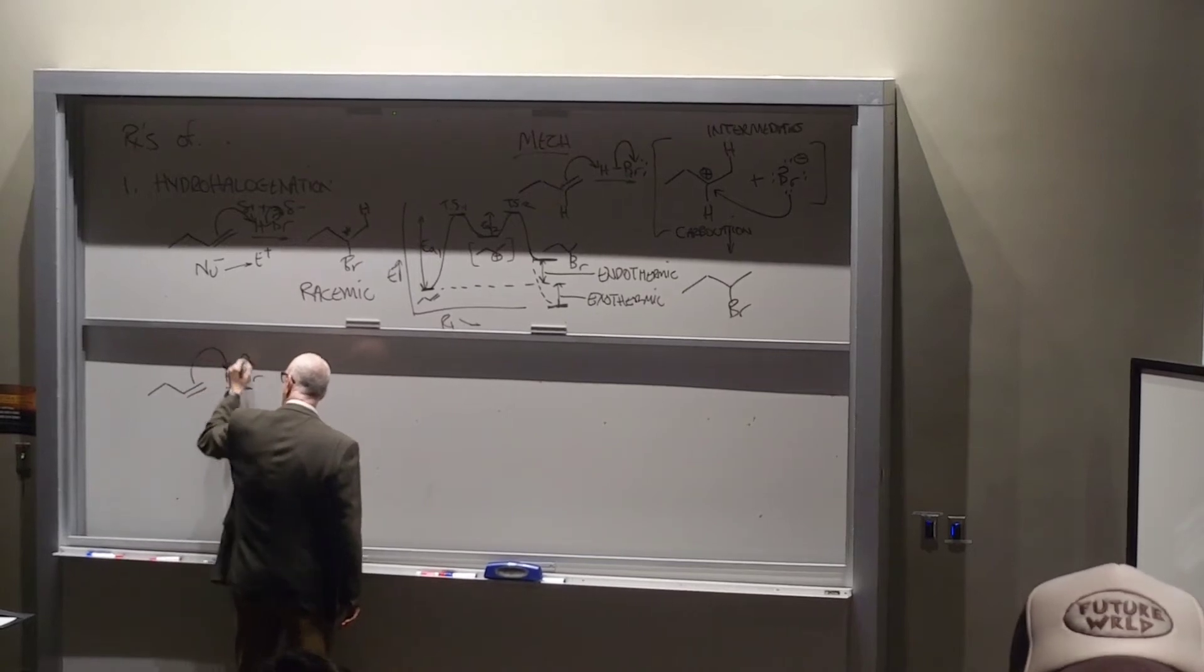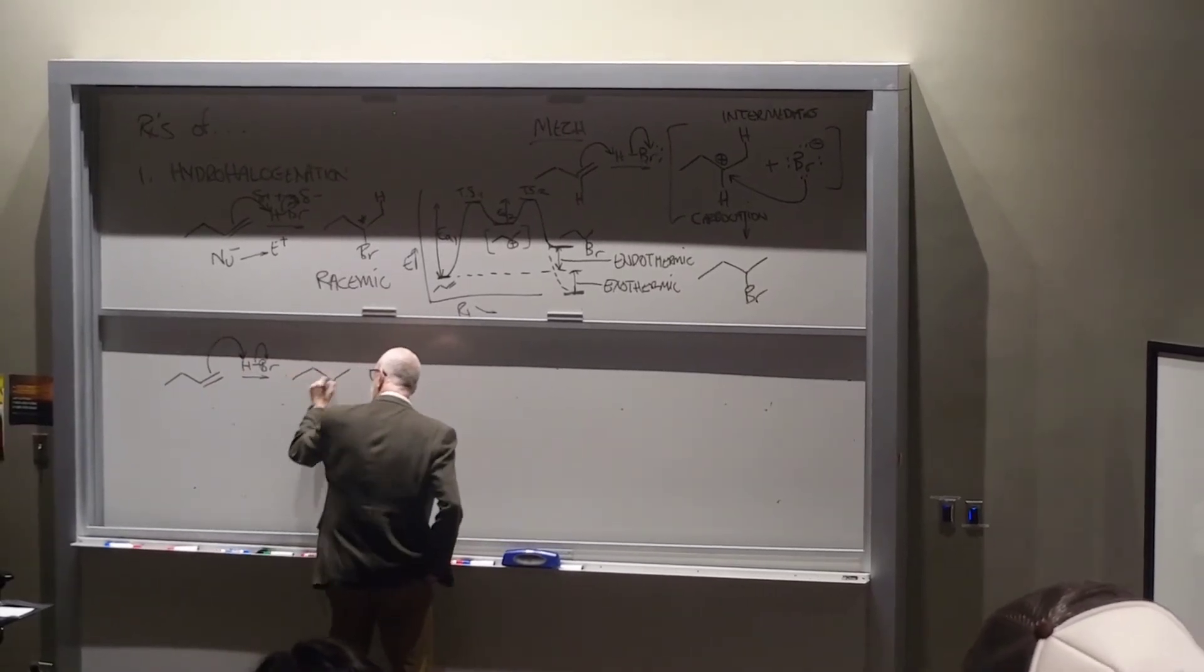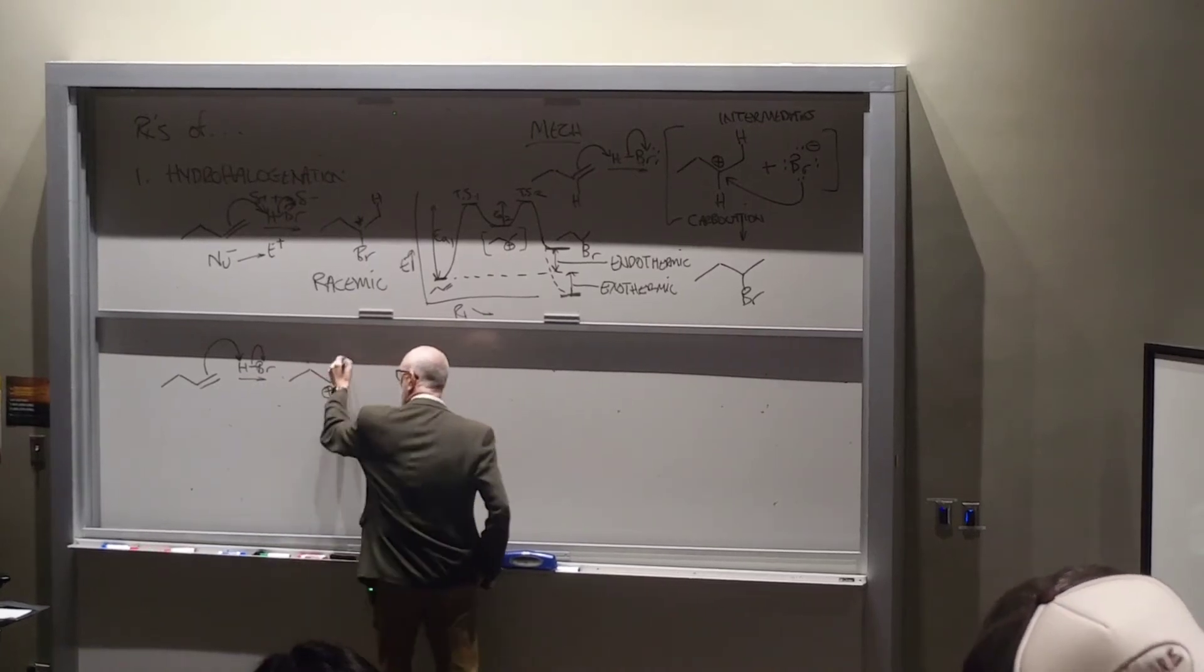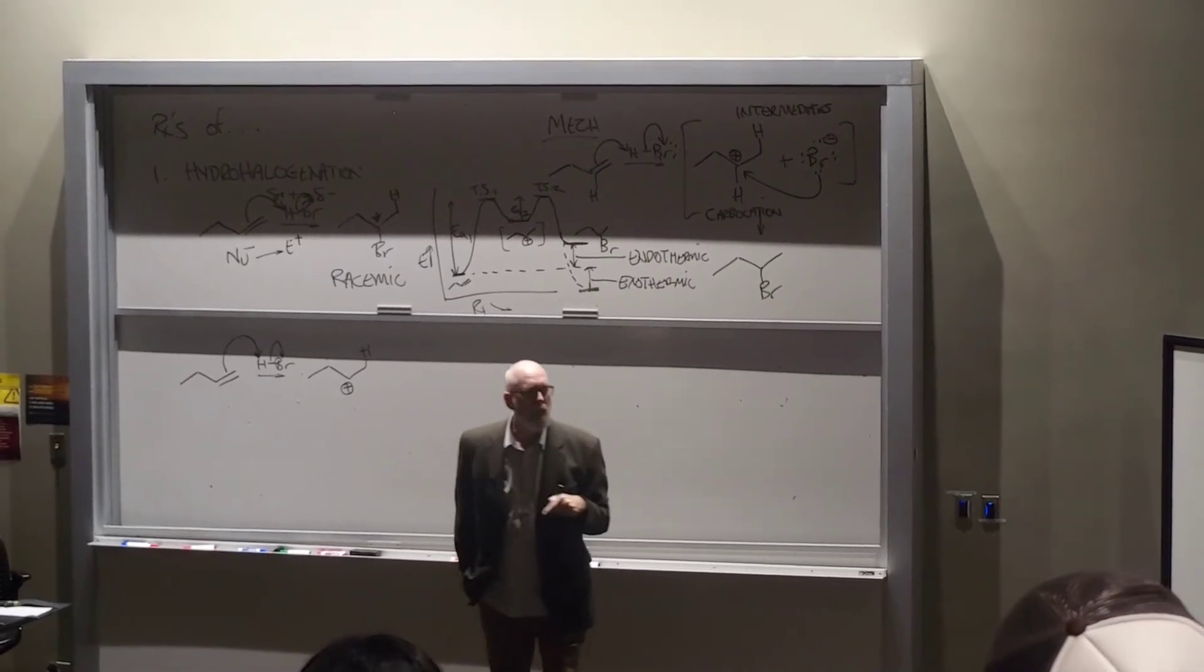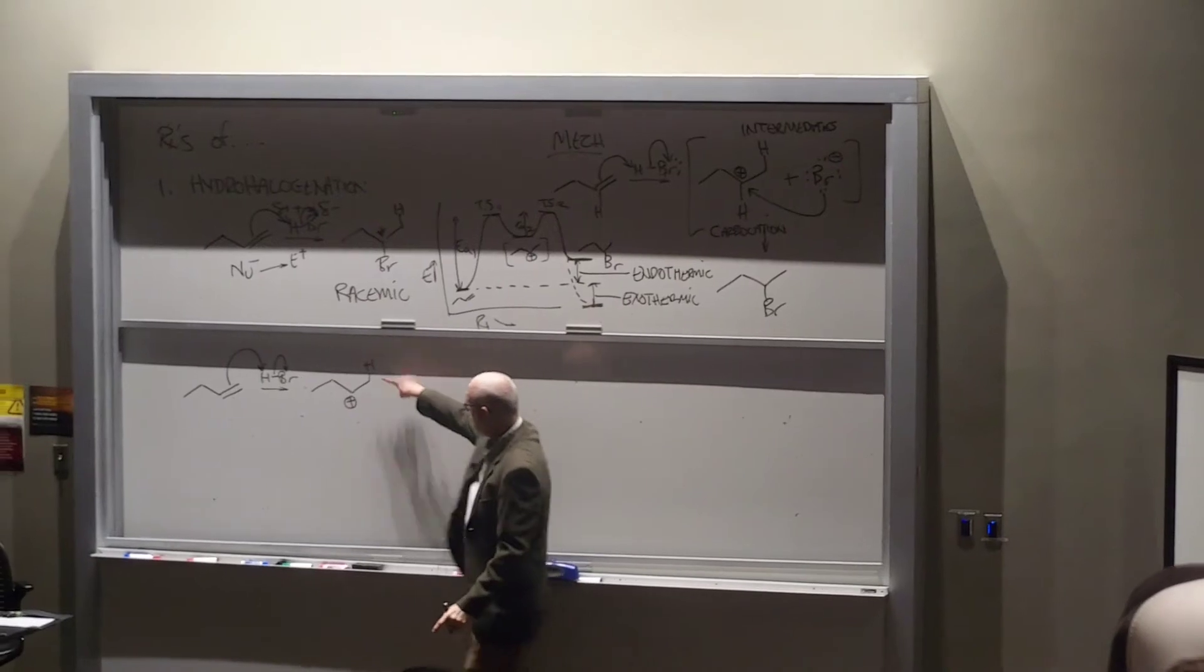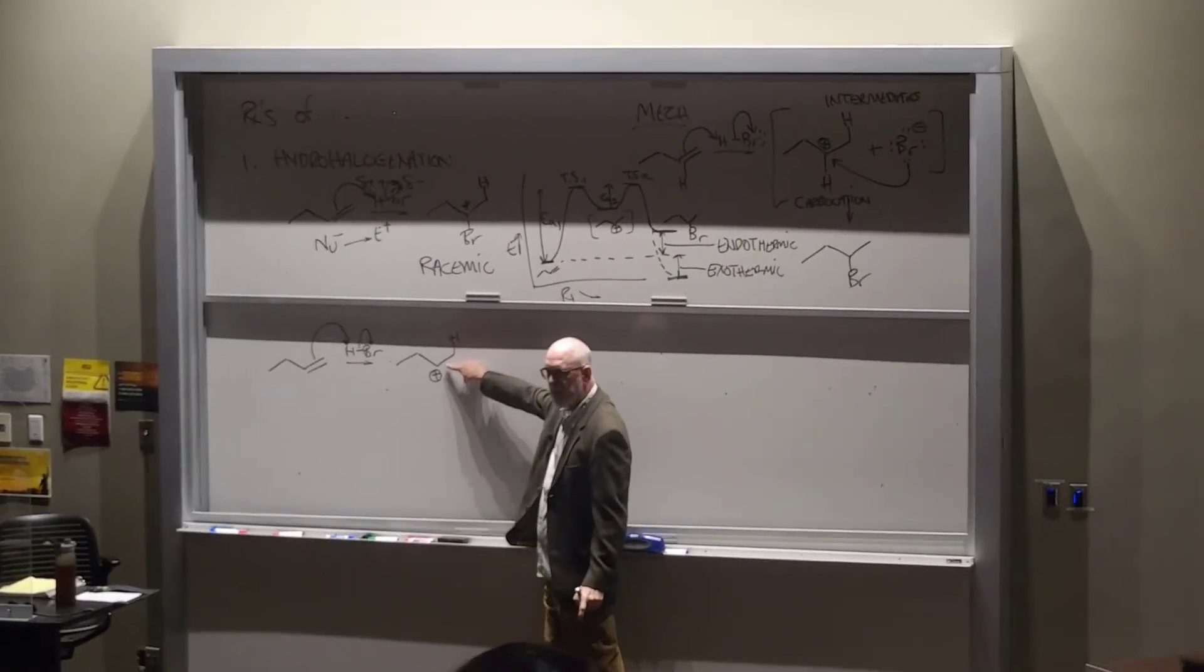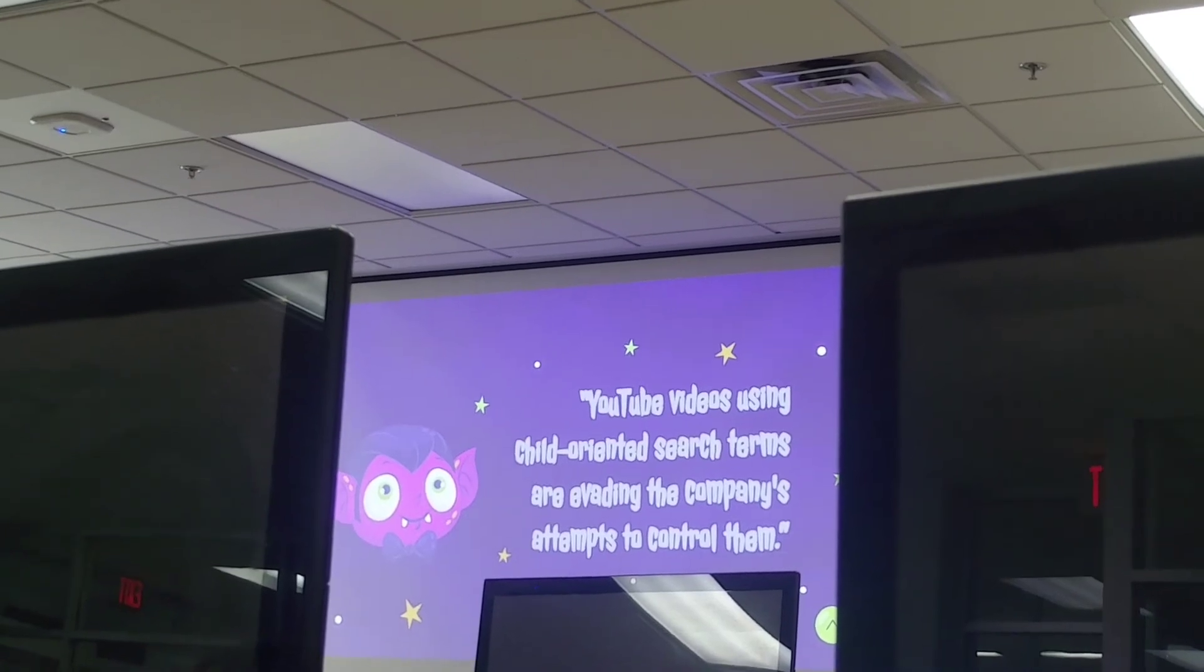This reaching out, doing that step, there are potentially two carbocations that I can generate. That carbon at the end could be the one that used this, used to be those electrons, used to be this pi bond. Now those six are bringing the company's intent to control that.